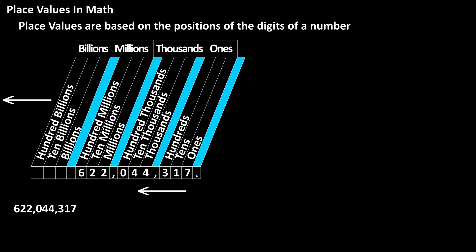And for numbers this large, we use commas between each group of three digits, starting at the decimal point and moving to the left.